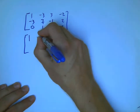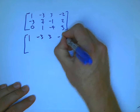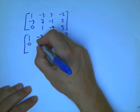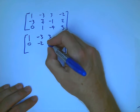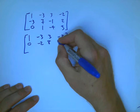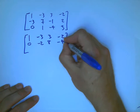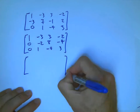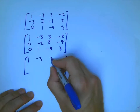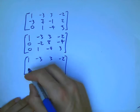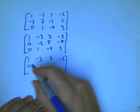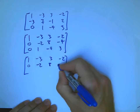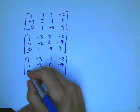So let's just crank out the reduction process. I'm going to add three times the top to the bottom, and I'm going to get minus two, eight, minus four. Now I'm going to take half of that and add it to the bottom row.